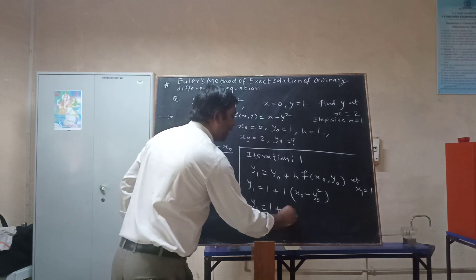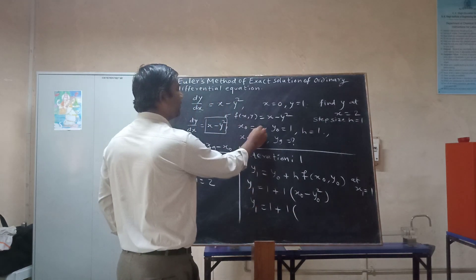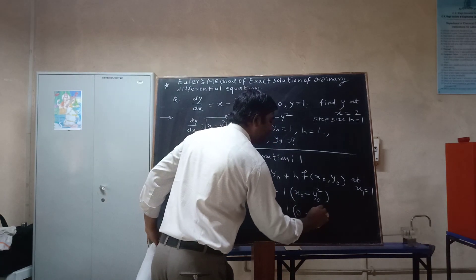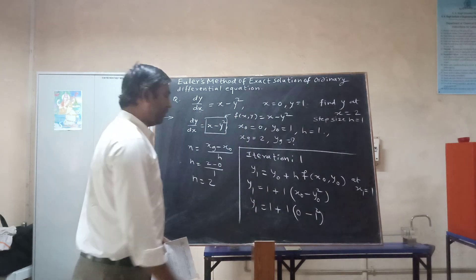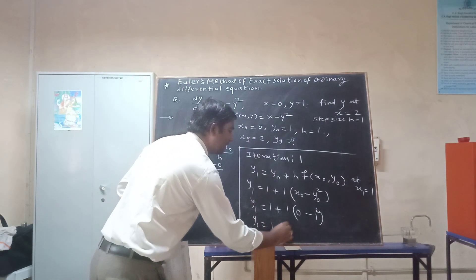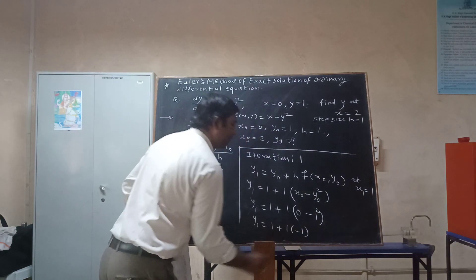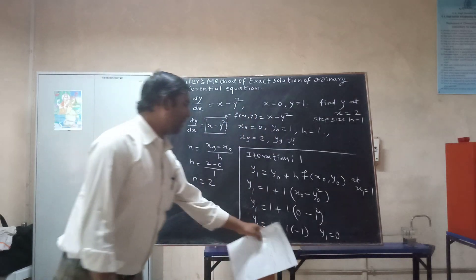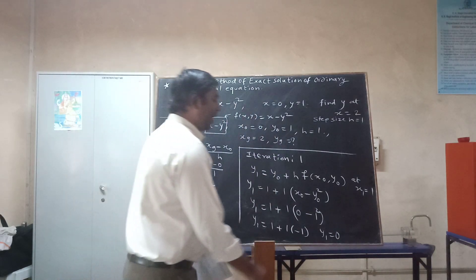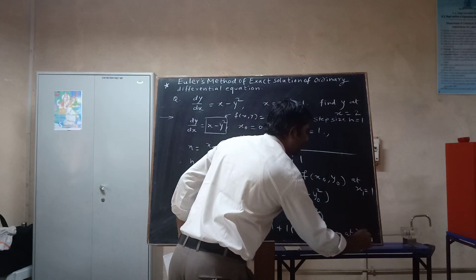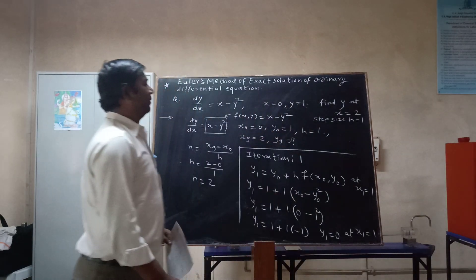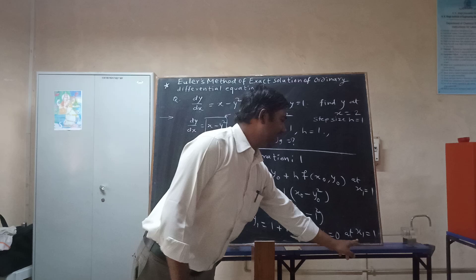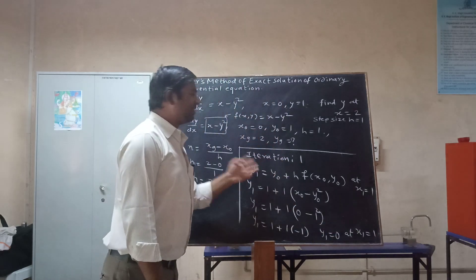Substituting the remaining values: x₀=0 and y₀=1, so f(x₀, y₀) = 0 minus 1 squared = minus 1. Therefore y₁ = 1 + 1 × (−1) = 0. So y₁=0, which is the value of y at x=1. This completes the first iteration.